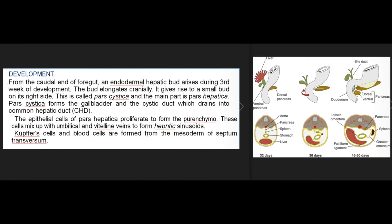Development: from the caudal end of the foregut, an endodermal hepatic bud arises during the third week of development. The bud elongates cranially and gives rise to a small bud on its right side called pars cystica; the main part is pars hepatica. Pars cystica forms the gallbladder and the cystic duct, which drains into the common hepatic duct. The epithelial cells of pars hepatica proliferate to form the parenchyma, which mixes with umbilical and vitelline veins to form hepatic sinusoids. Kupffer cells and blood cells are formed from the mesoderm of the septum transversum.